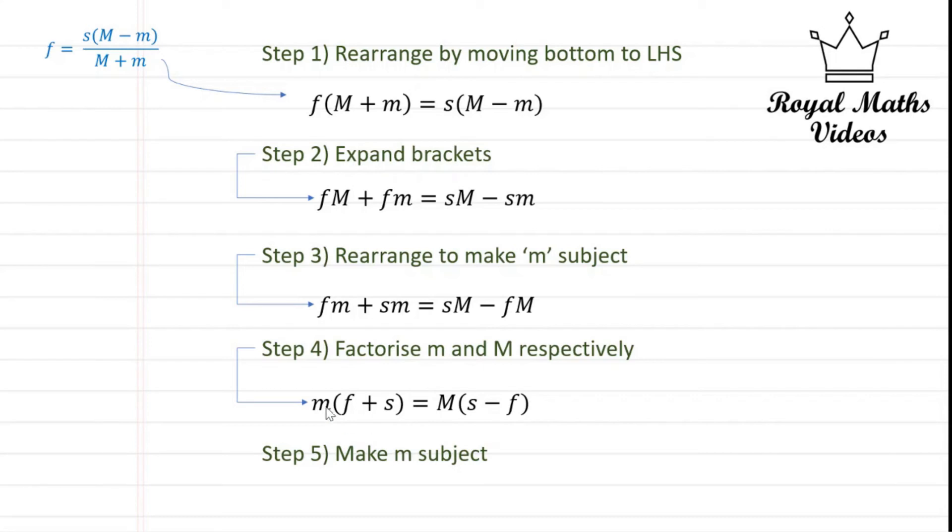Now step five would be to make lowercase m the entire subject of the expression which is really easy. It can be achieved by dividing both sides by f plus s.